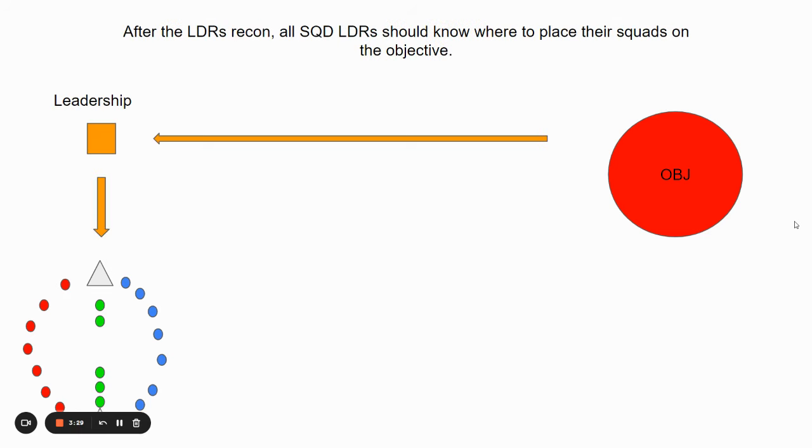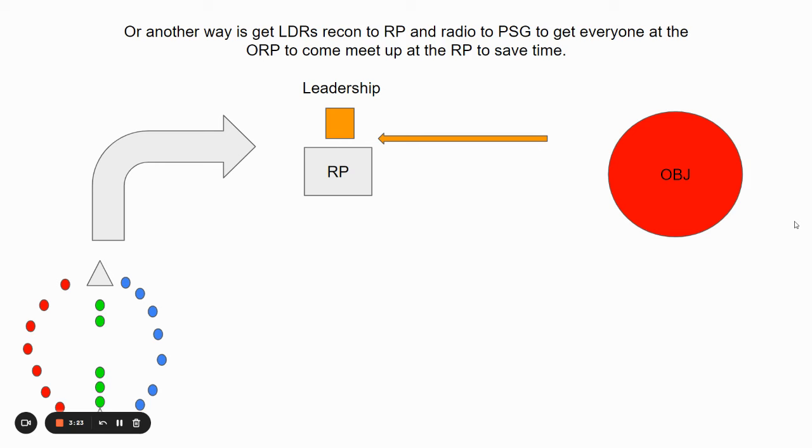After the leader's recon, all squad leaders should know where to place their squads on the objective. They're going to come back into the ORP. Or another way that's more efficient is after the leader's recon, the leadership will go back to the release point and radio to the PSG to get everyone at the ORP to come meet up at the RP.